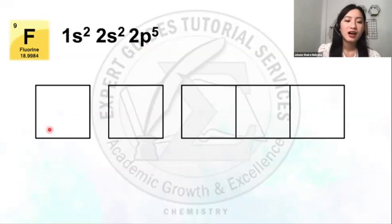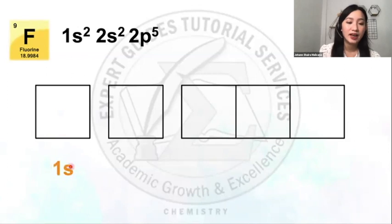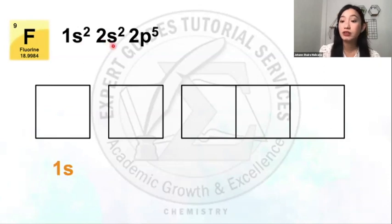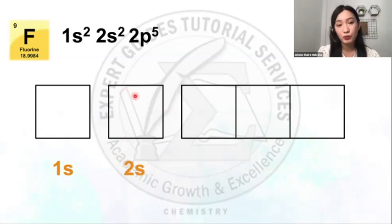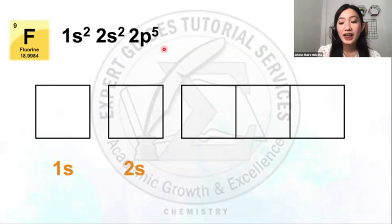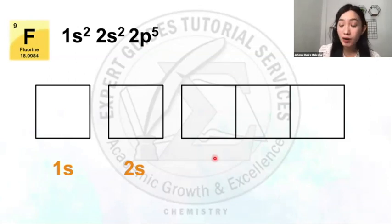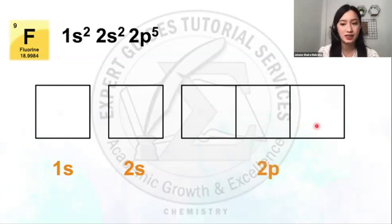Using the electron configuration, we can also represent it with an orbital diagram, where each box represents one orbital. An orbital contains at most two electrons. For fluorine's configuration of 1S², 2S², 2P⁵: the 1S level has one orbital (one box), 2S has one orbital (one box), and 2P has three orbitals (three boxes), since P has three orbitals.